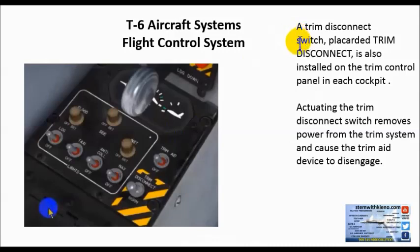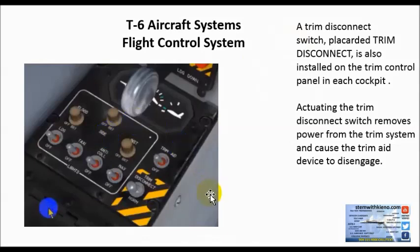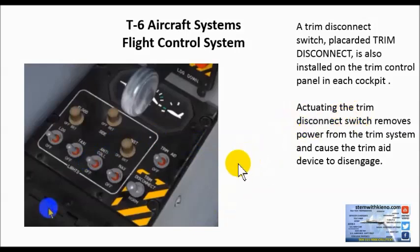A trim disconnect switch, placarded 'trim disconnect,' is also installed on the trim control panel in each cockpit — both the front and rear cockpit, for the student naval aviator and the instructor pilot. Actuating the trim disconnect switches removes power from the trim system and causes the trim aid device to disengage.